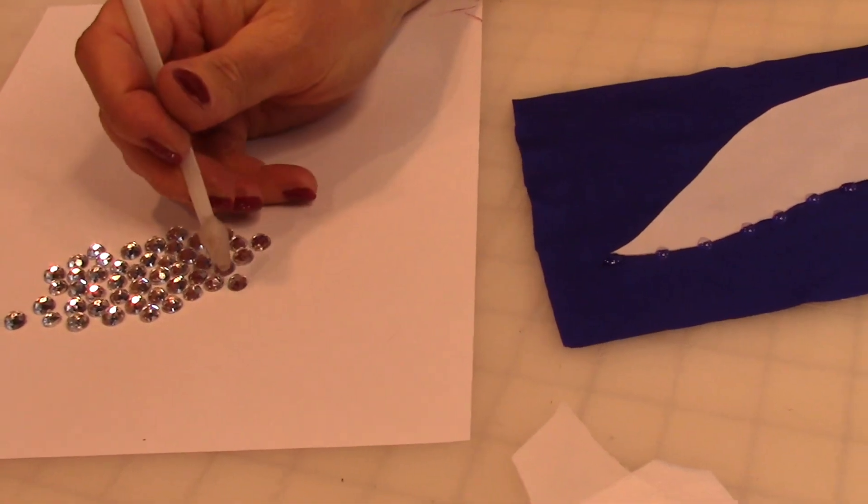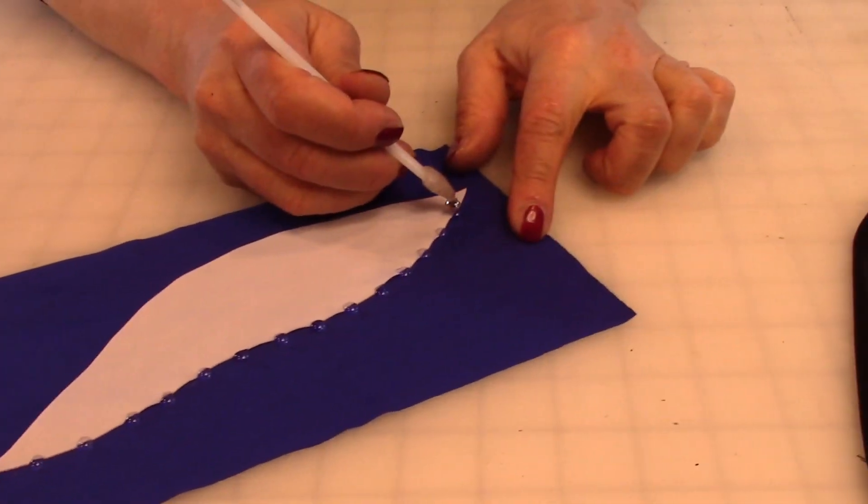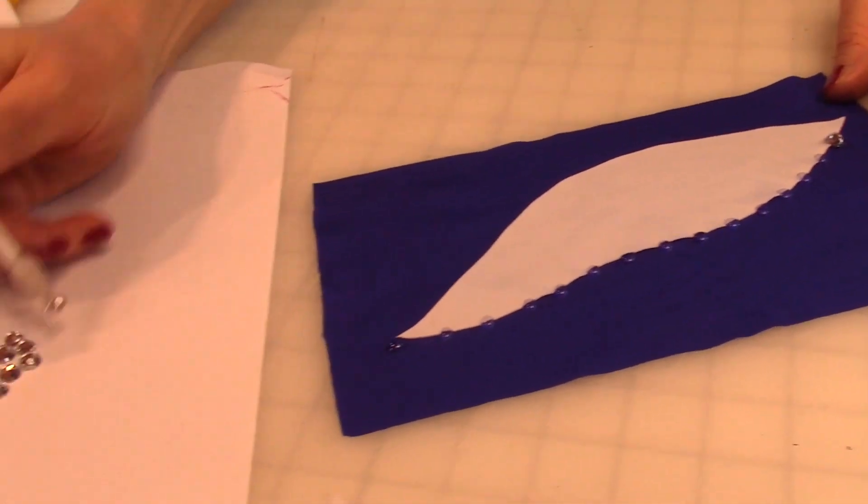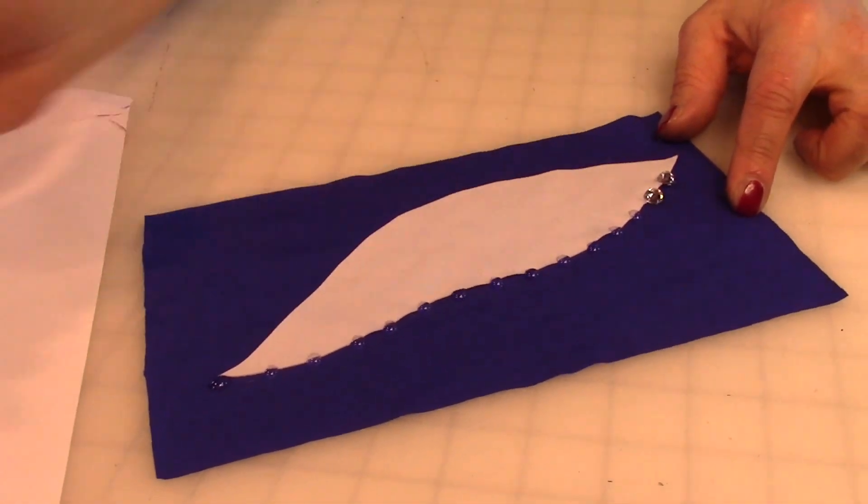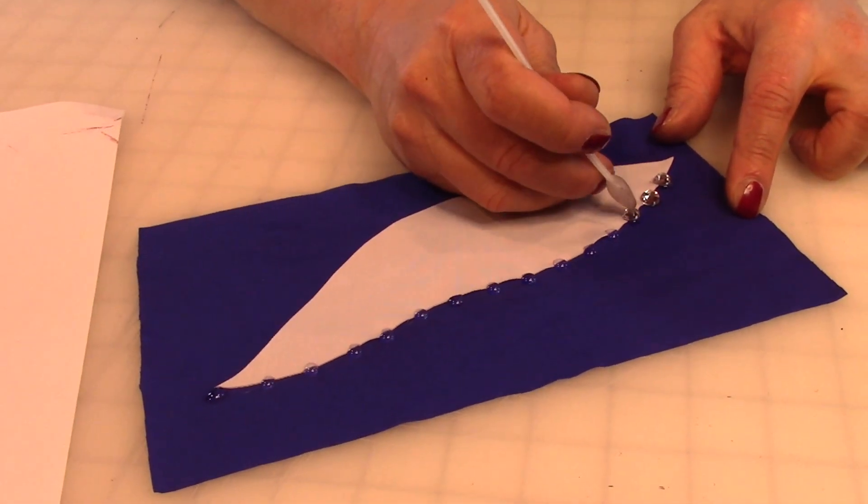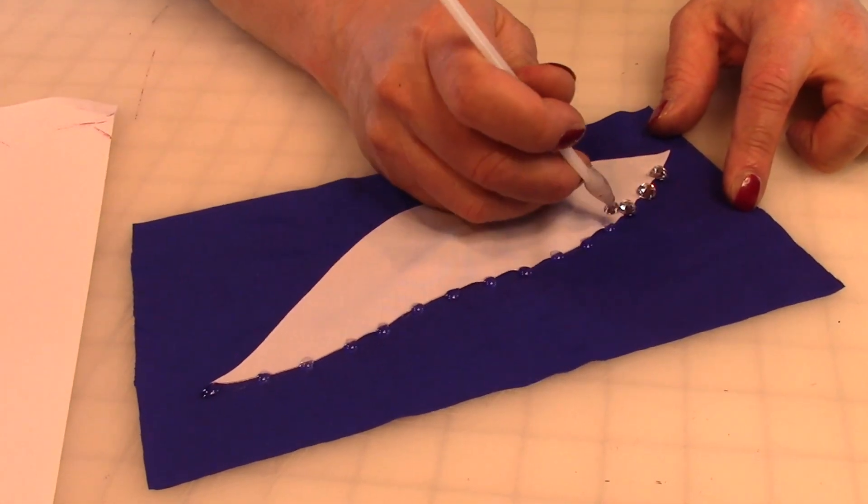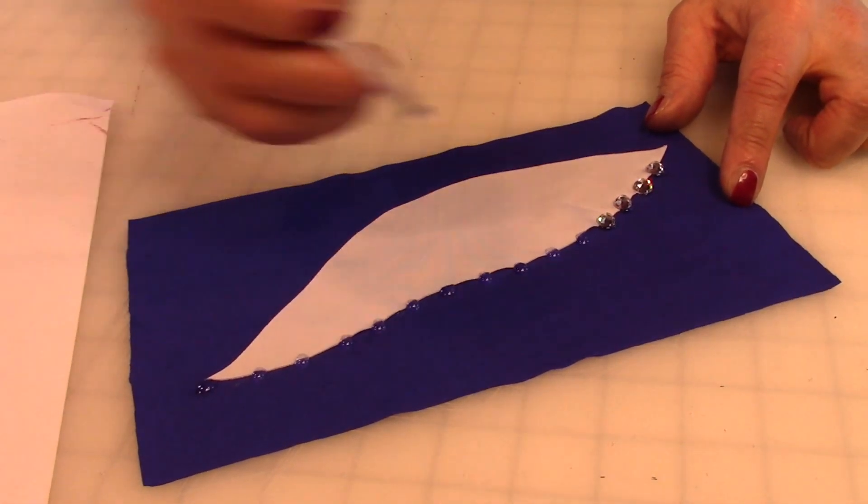So what we're going to do now is just pick up a stone and put it on the glue. And as you can see, this stone is going to hold the applique in place. So really there's no sewing involved at all.